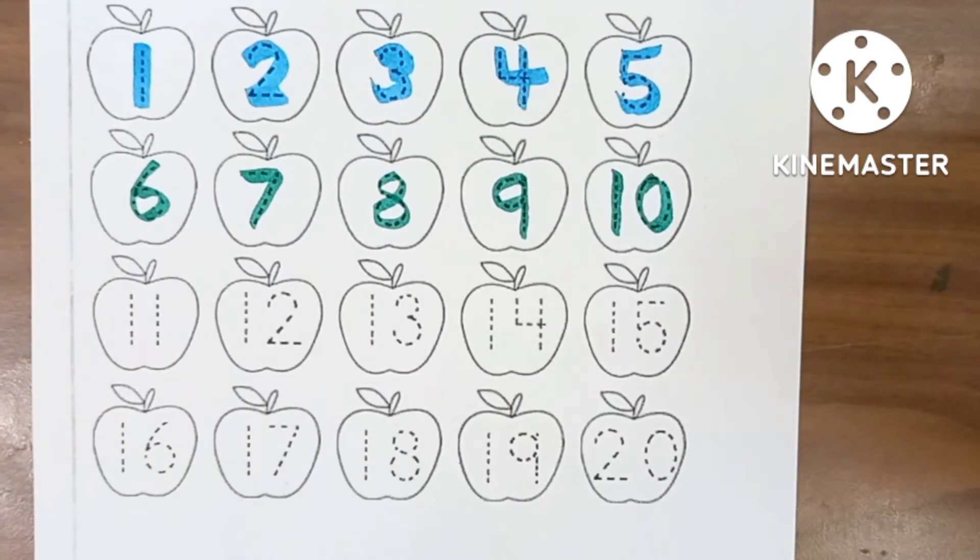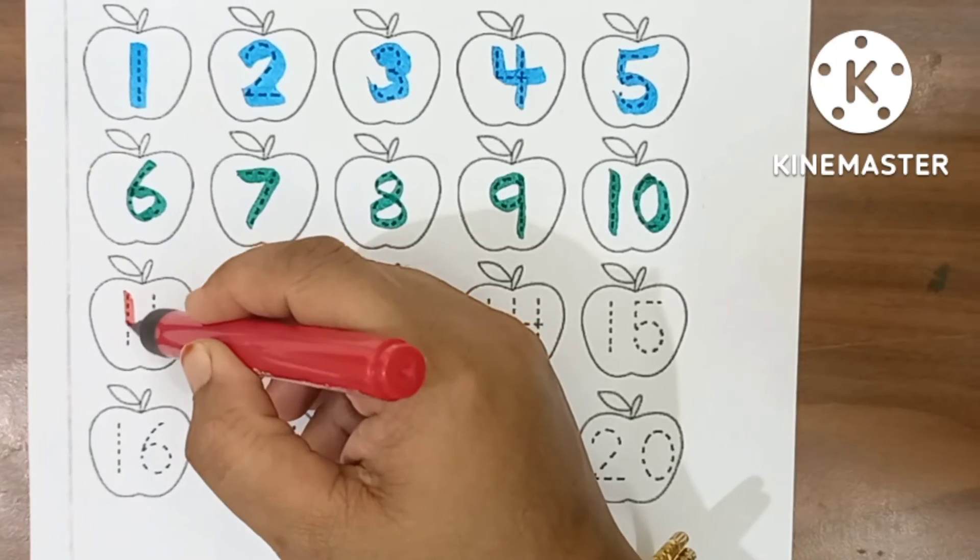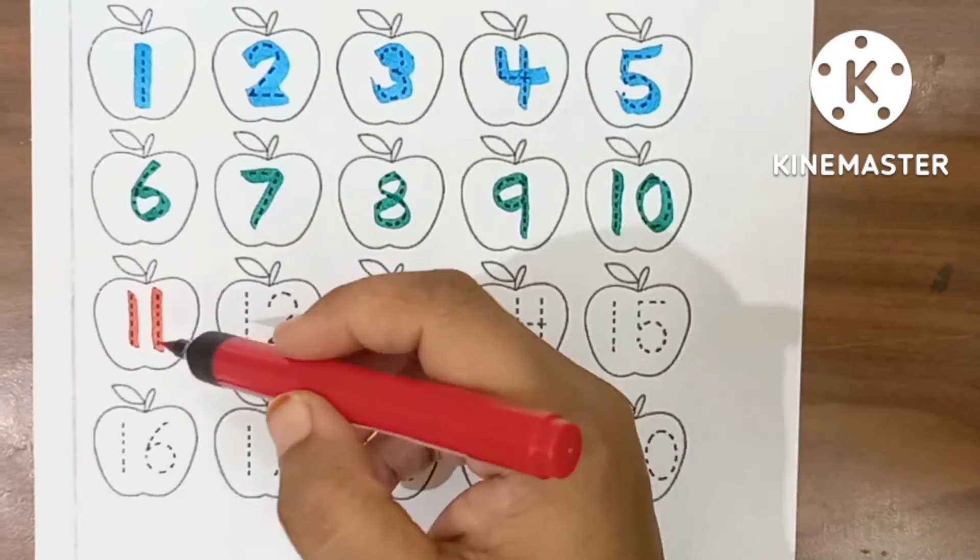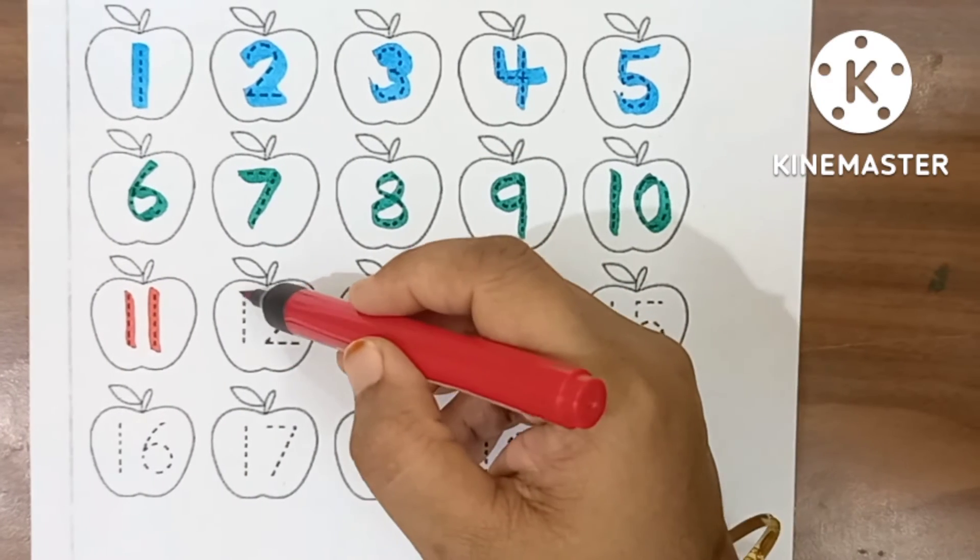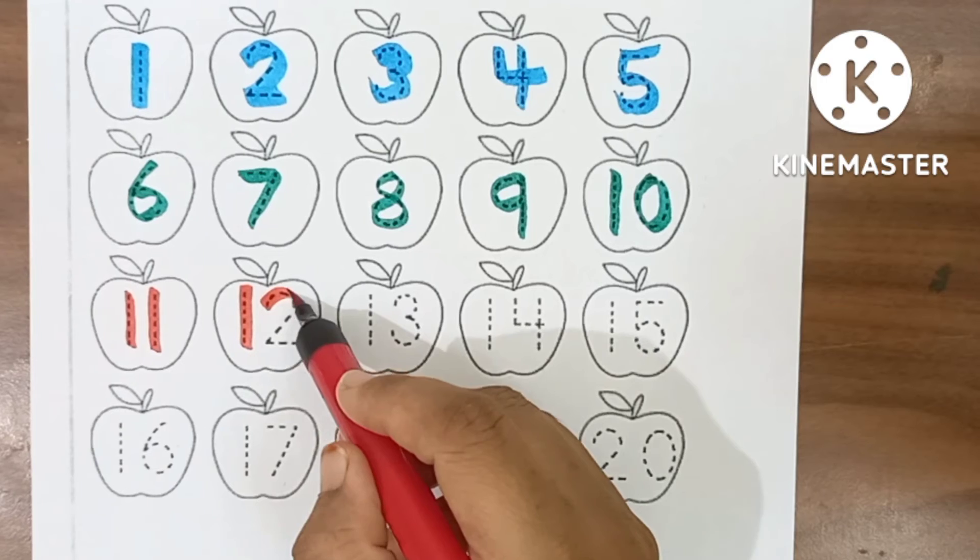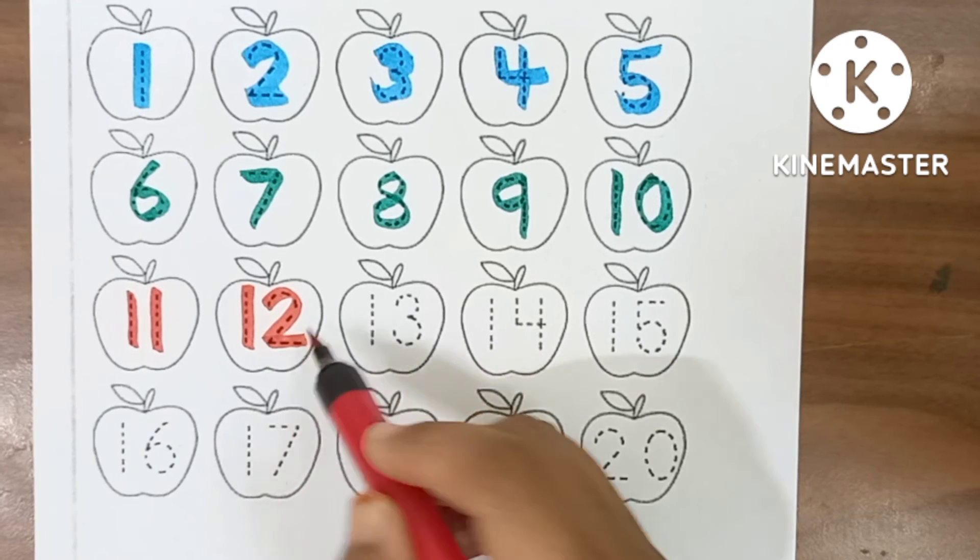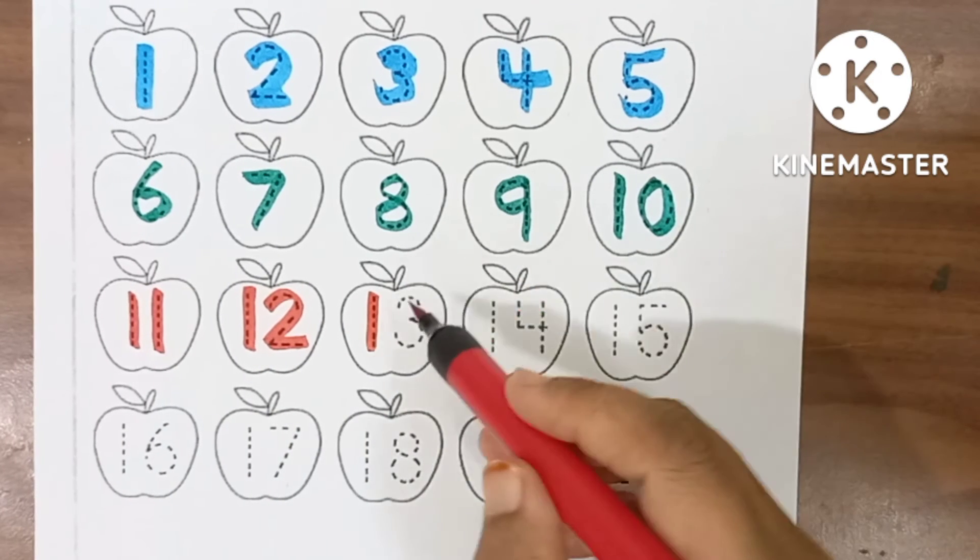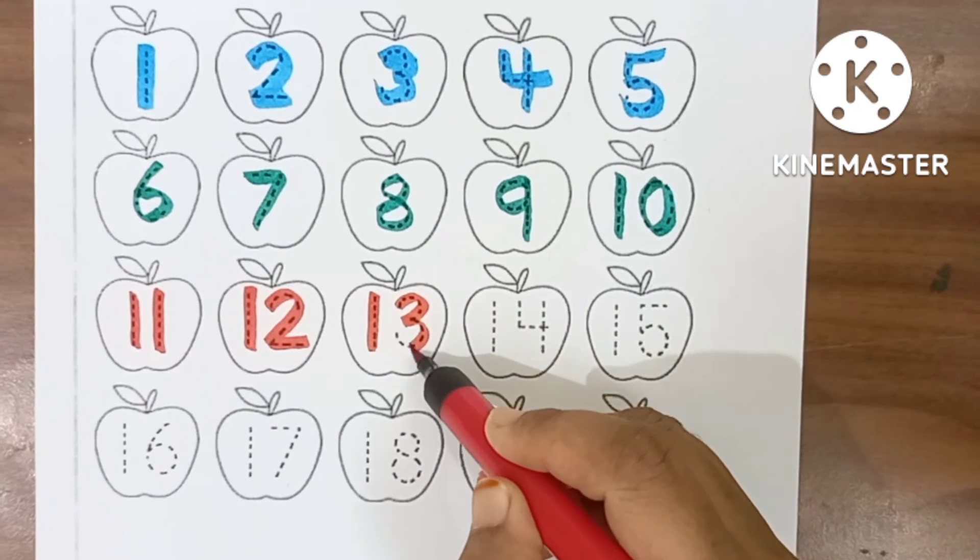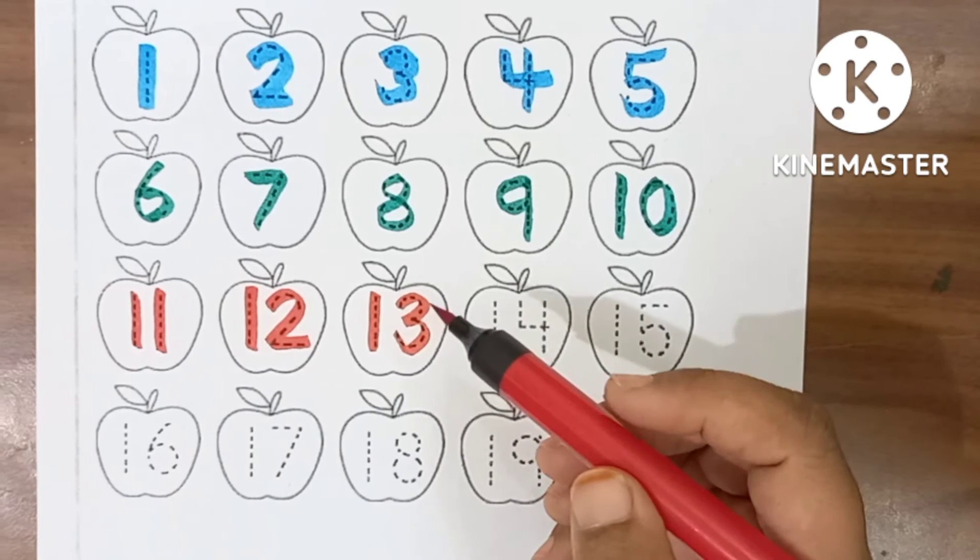Red Colour. 1-1, 11, E-L-E-V-E-N-11. 1-2, 12, T-W-E-L-V-E-12. 1-3, 13, T-H-I-R-T-E-N-13.